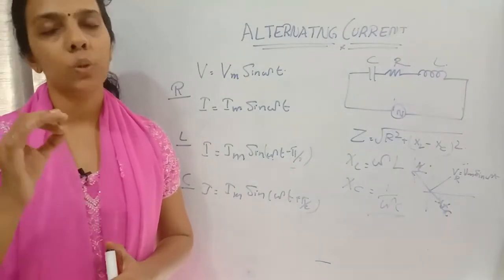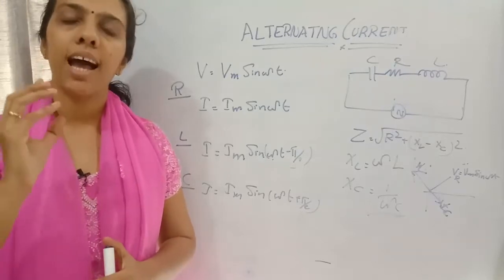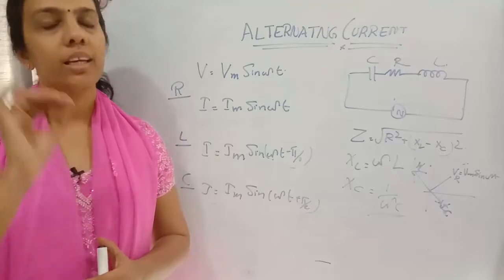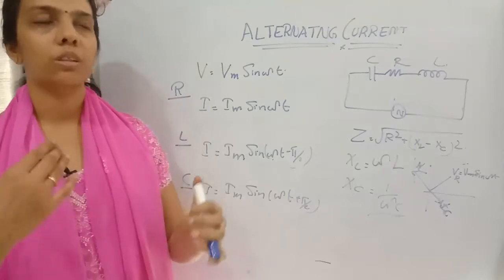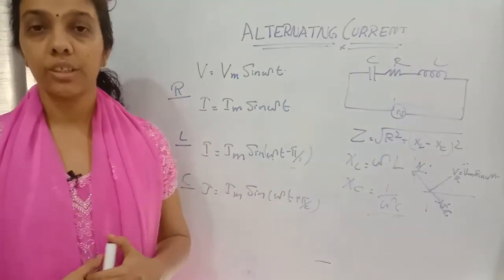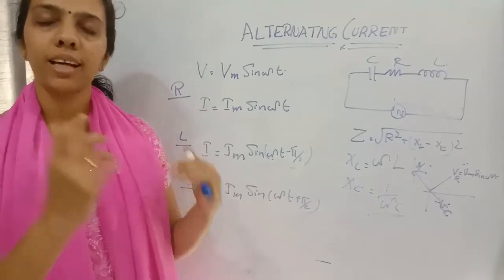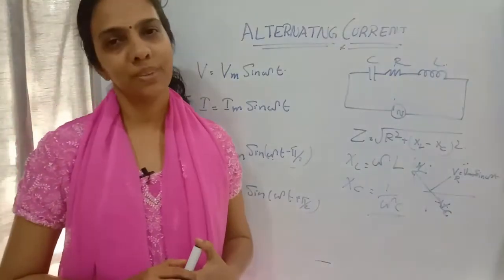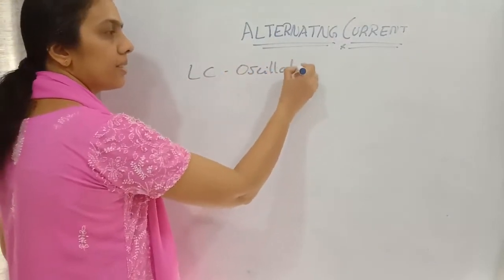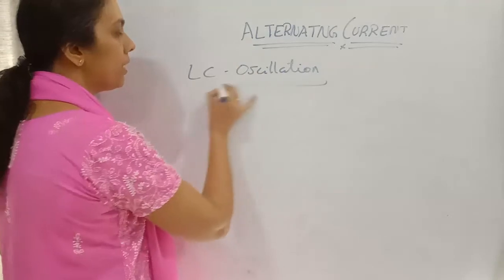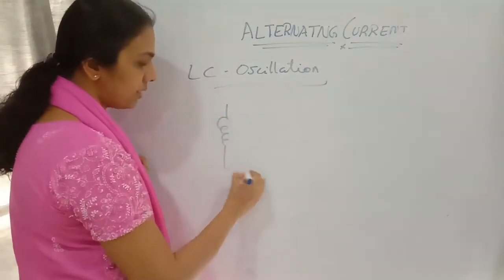Next, we are moving to LC oscillations. LC oscillations means only an inductor and a capacitor are present in the circuit. We are going to see how the circuit behaves and why we call it an oscillation. In the circuit, there is an inductor — which is a coil — and a capacitor.